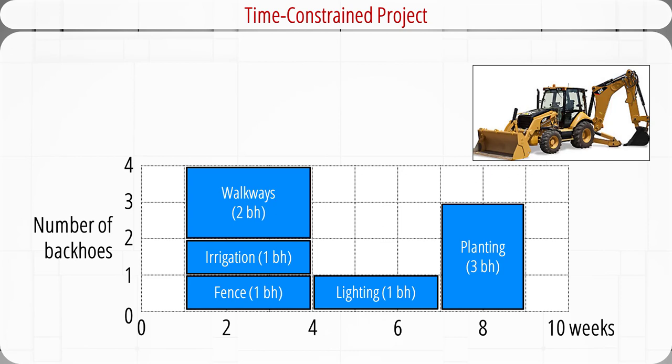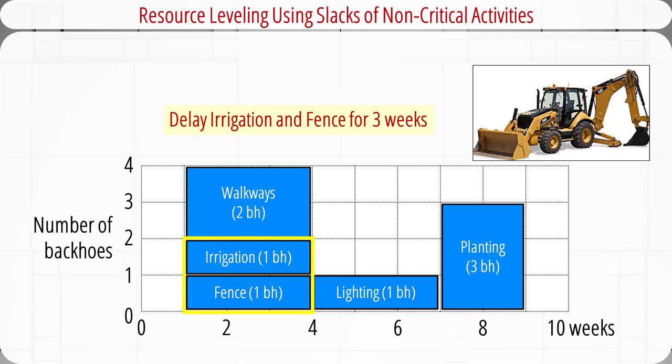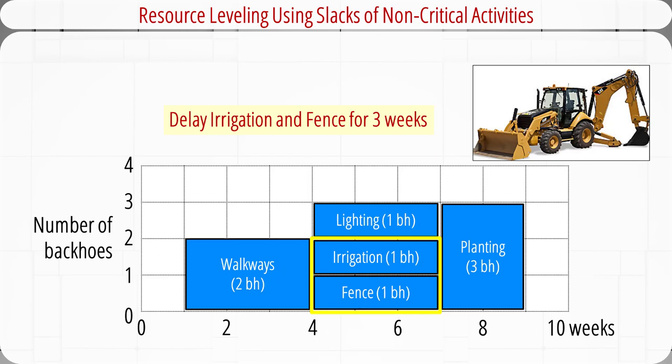Let's assume this is a time-constrained project — it must be completed by week 9. We will use leveling techniques and move non-critical activities to smooth the resource demand without delaying the whole project. By utilizing the slack and delaying irrigation and fence for three weeks, the number of backholes needed from week 1 to week 3 is reduced from 4 to 2, and from week 4 to week 7 is increased from 1 to 3. The new demand profile is much smoother. The project will still finish within 9 weeks, and the backholes needed over the life of the project have been reduced from 4 to 3. This is achieved at the cost of reduced flexibility and increased criticality of some activities.